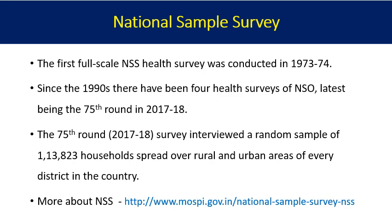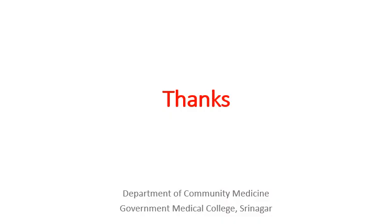Finally, hospital records and local surveys are minor sources of vital statistics. For example, conducting a survey in a field practice area and asking households about births or deaths in the last three months, six months, or one year can provide vital statistics data. A researcher may similarly investigate infant mortality rate, birth rate, or death rate for a particular area. However, these are considered very minor sources.